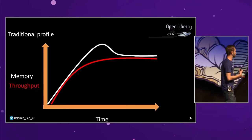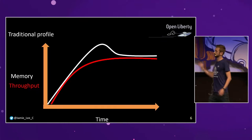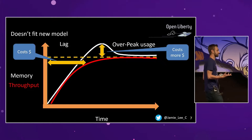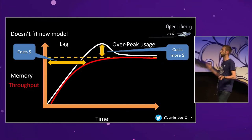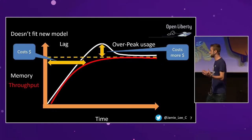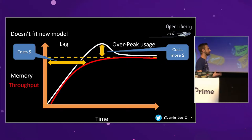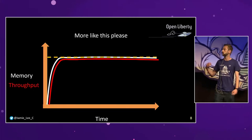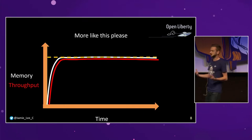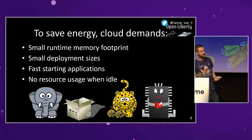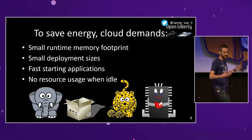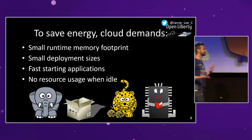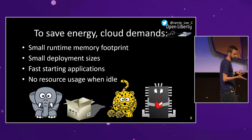This is traditionally how our application runtimes used to work, but there's a problem with this. Essentially, the amount of time it takes for applications to start up is pretty much completely wasted resources. When our JVMs and runtimes go over peak, it's costing us money, which in turn equals energy. We really want something where applications start up very quickly and throughput is as high as possible very quickly, because that initial startup time is pretty much completely wasted energy.